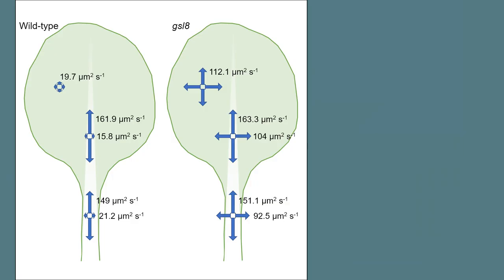Based on the data from the photoactivation experiments, we calculated effective permeabilities for auxin, which reflect the much higher diffusive capacity along the elongated cells than across these cells.